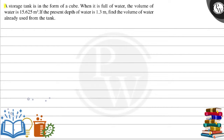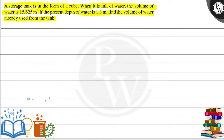Hello, here is a question. A storage tank is in the form of a cube. When it is full of water, the volume of water is 15.625 meter cube. If the present depth of water is 1.3 meter, find the volume of water already used from the tank.